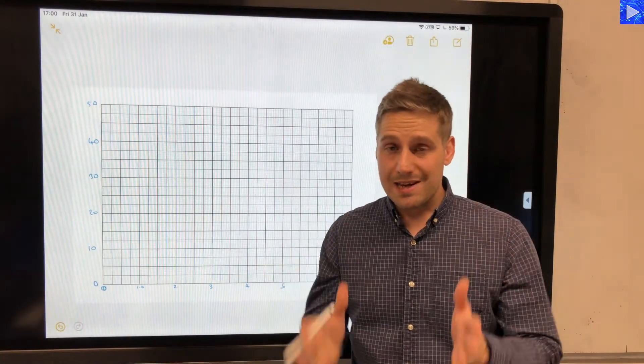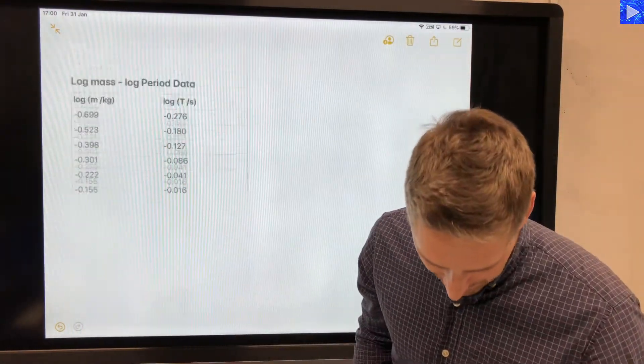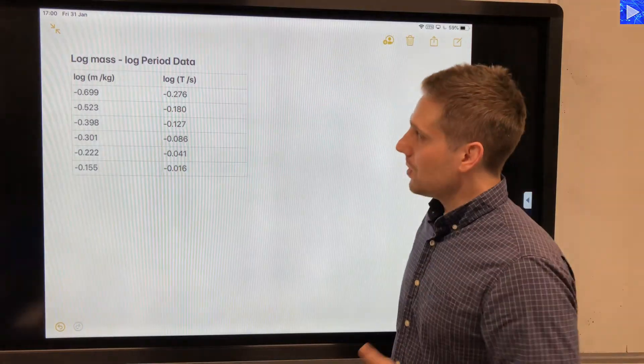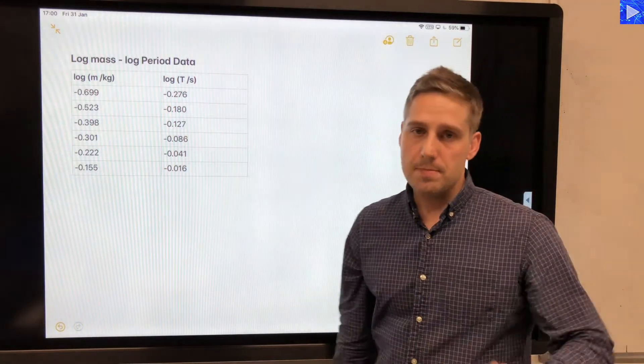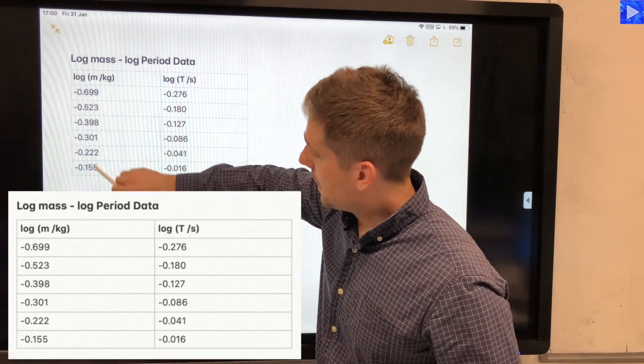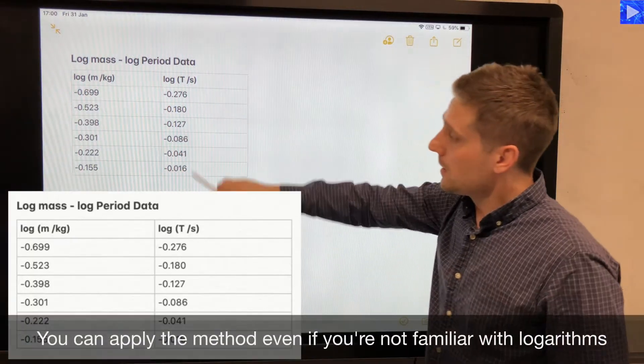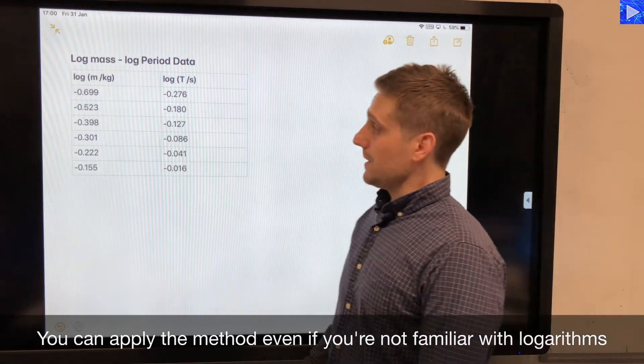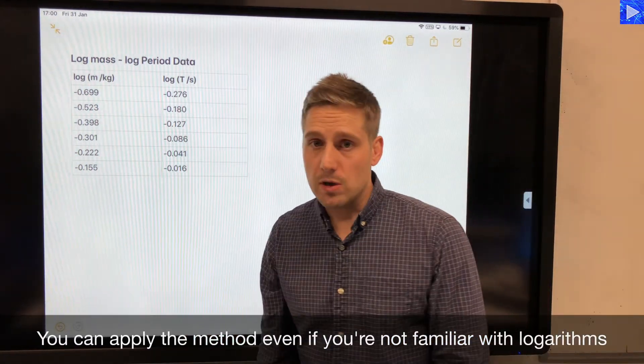Now we're going to do the same procedure with some slightly messier data, so I've got some log mass and log time period data. Here we've got some negatives, not very round numbers, so we're going to apply the same procedure to this and see how it works out.